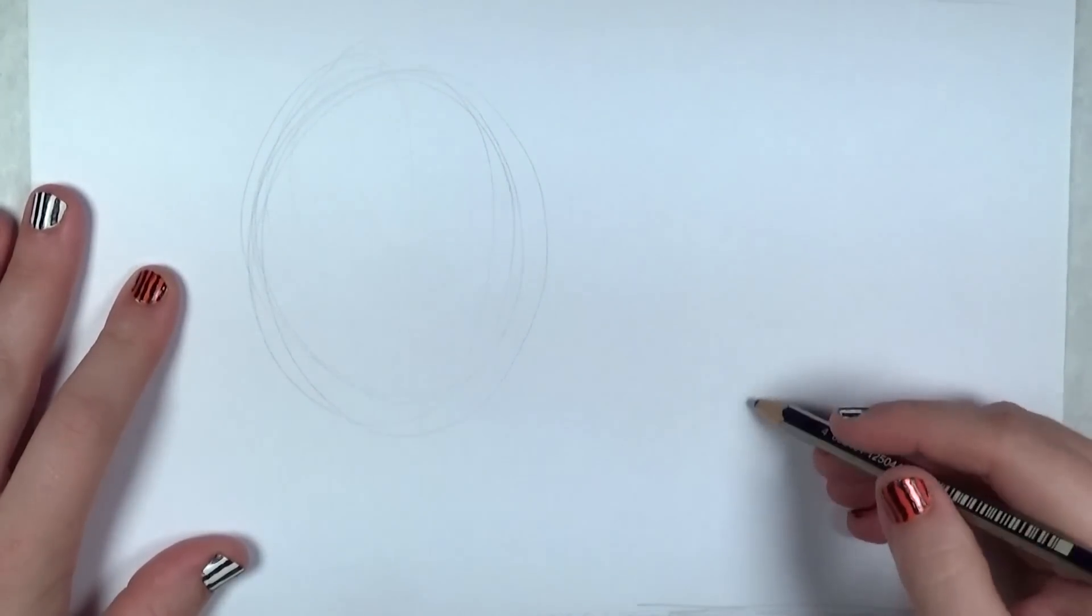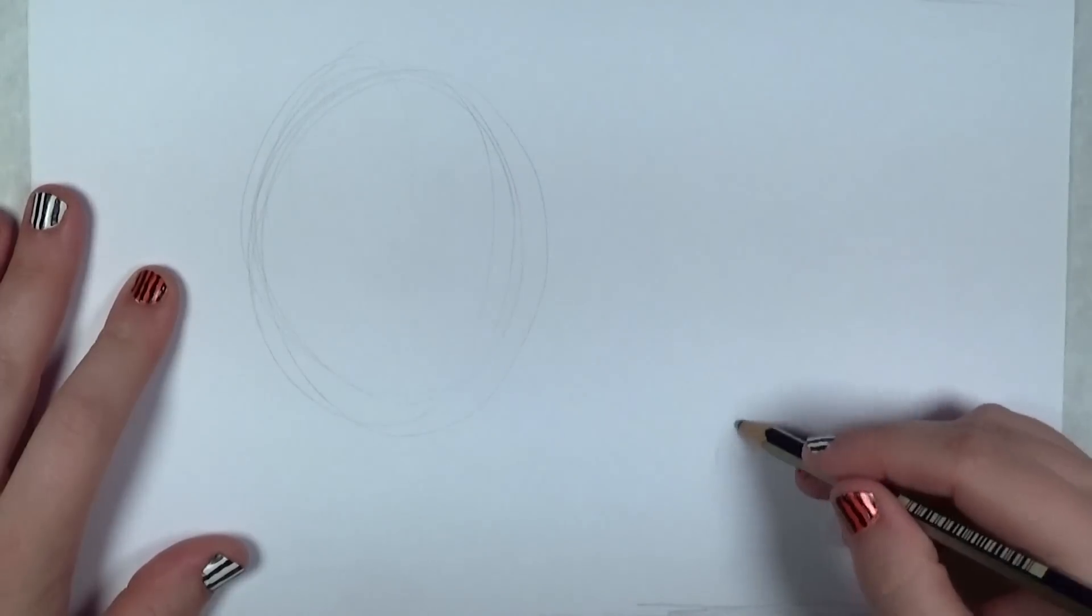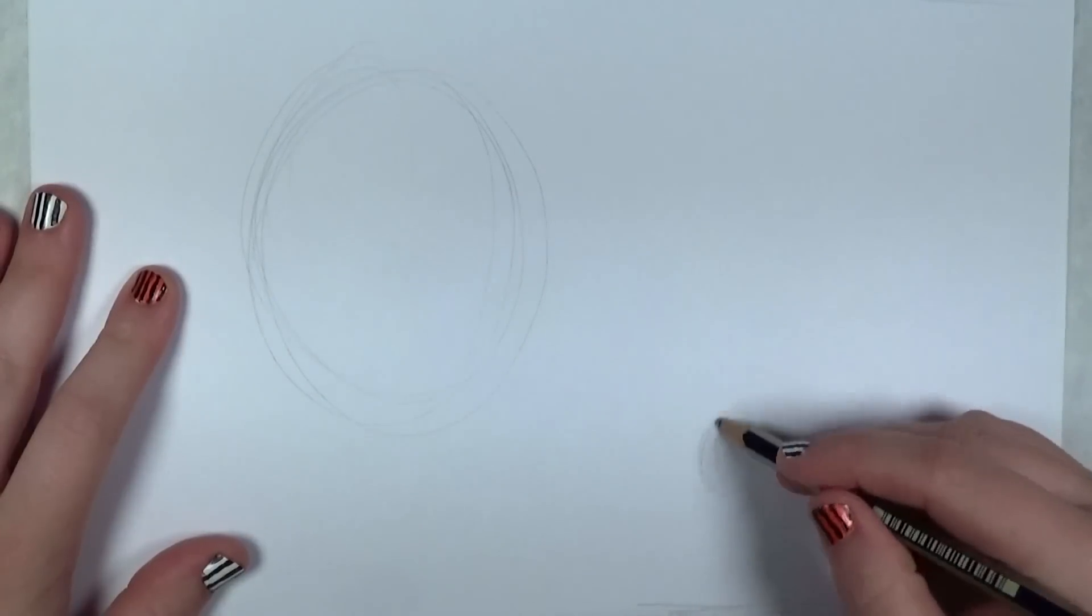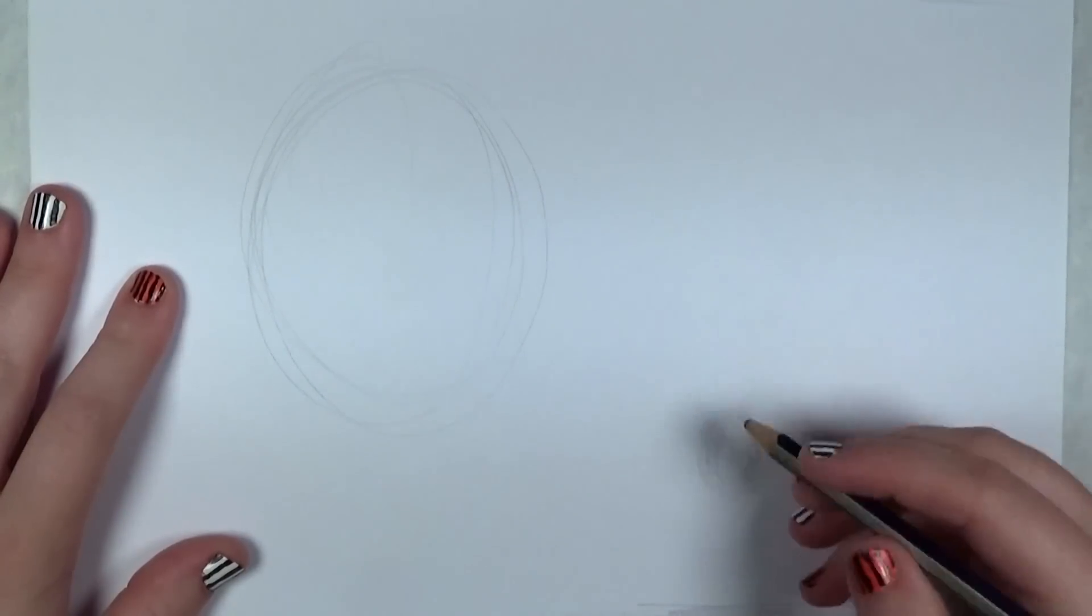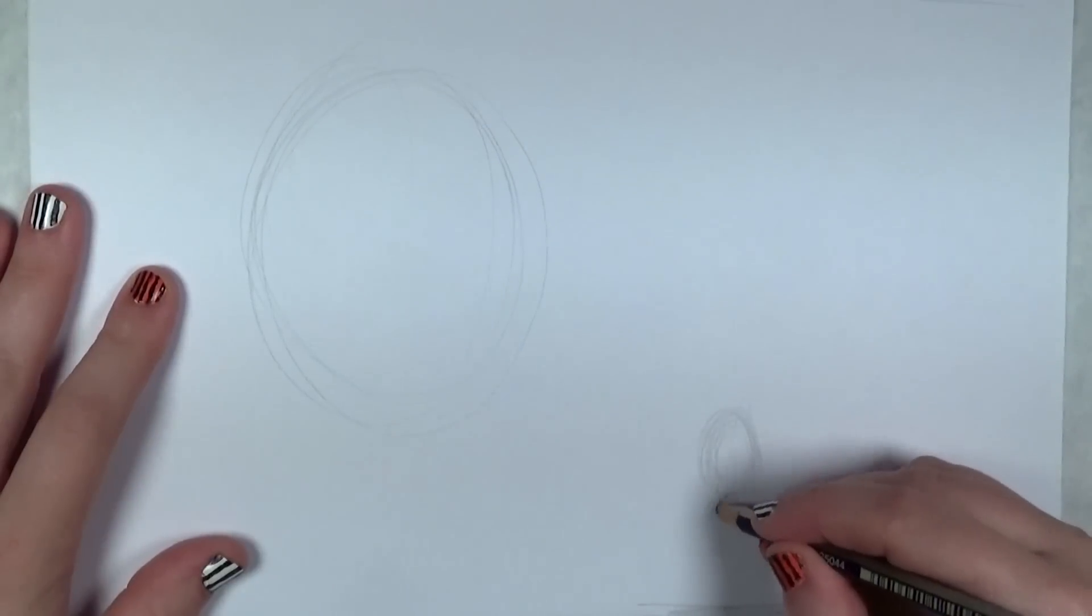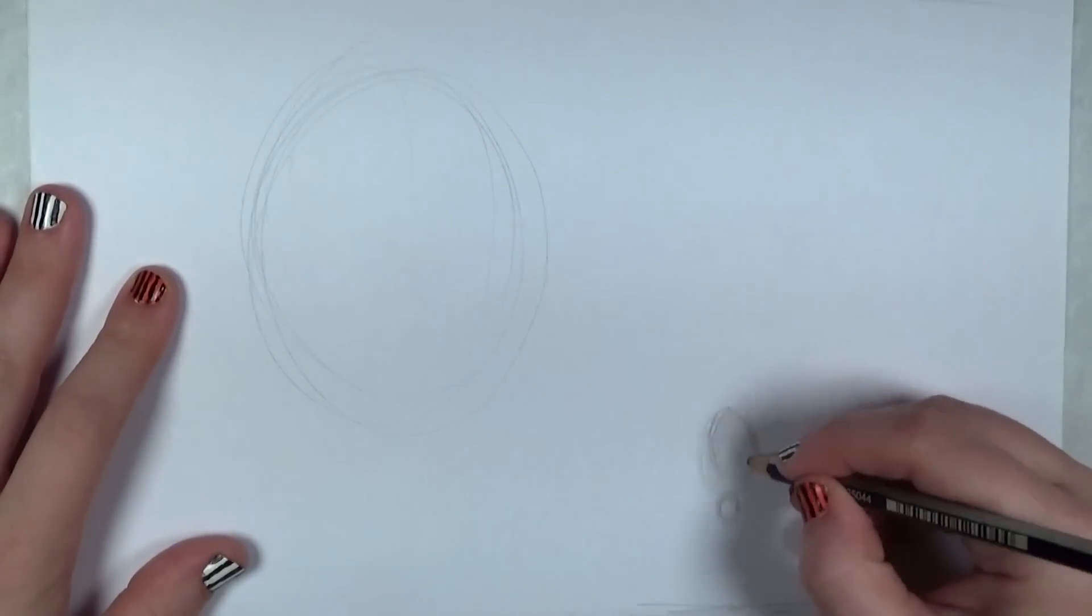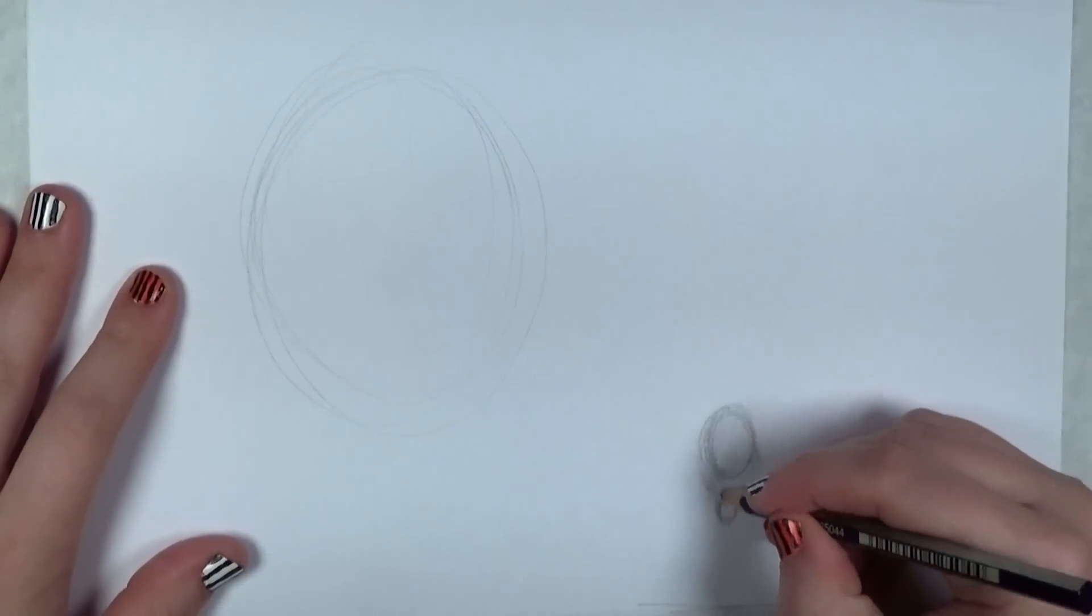First begin by drawing an oval shape to the upper left of your paper, and then draw a smaller oval shape. The little one's going to be the spider and the large one is the web. I'm going to draw the head as well for the spider.